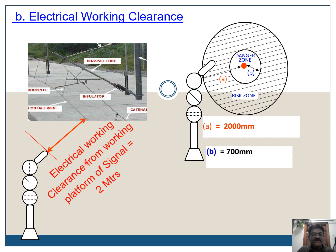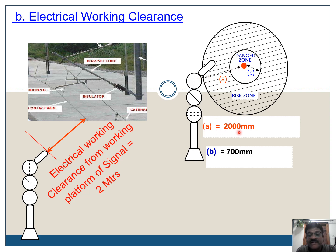Coming to electrical working clearance from the working platform of a signal: it should be 2 meters. The distance between the signal working platform and the nearest part of the live OHE shall be 2 meters. As shown in the figure, this is the contact wire and the distance from the signal shall not be less than 2000 mm, that is 2 meters. At any cost, no signaling equipment shall be within the 700 mm zone nearer to the live OHE.